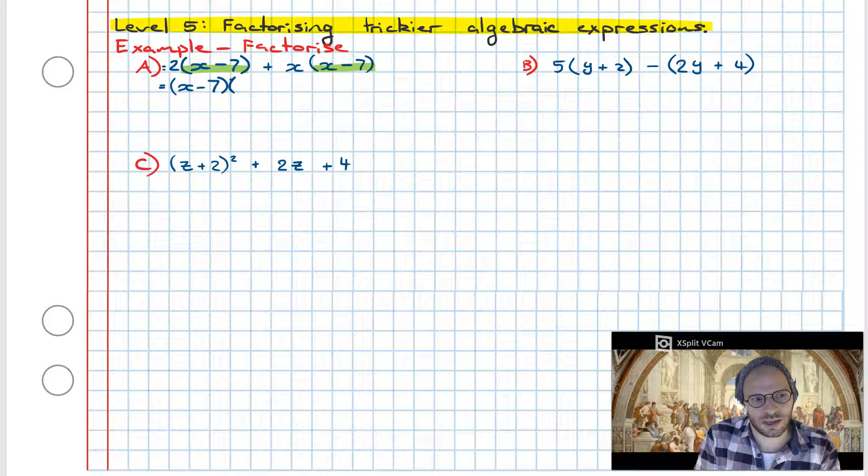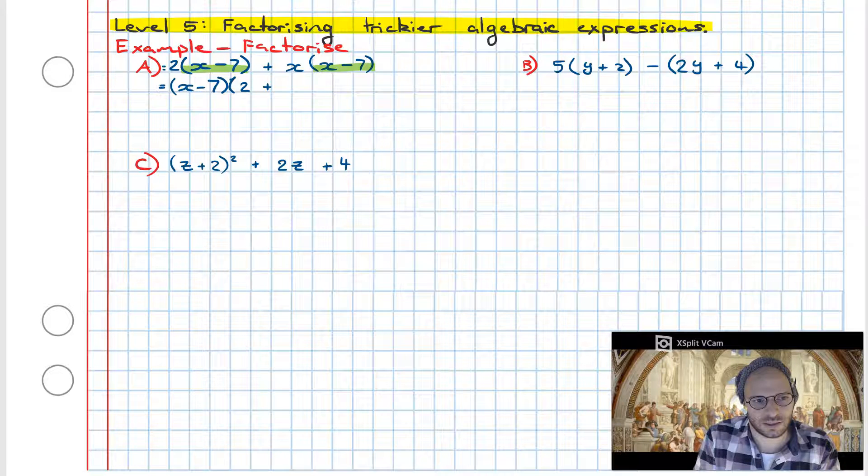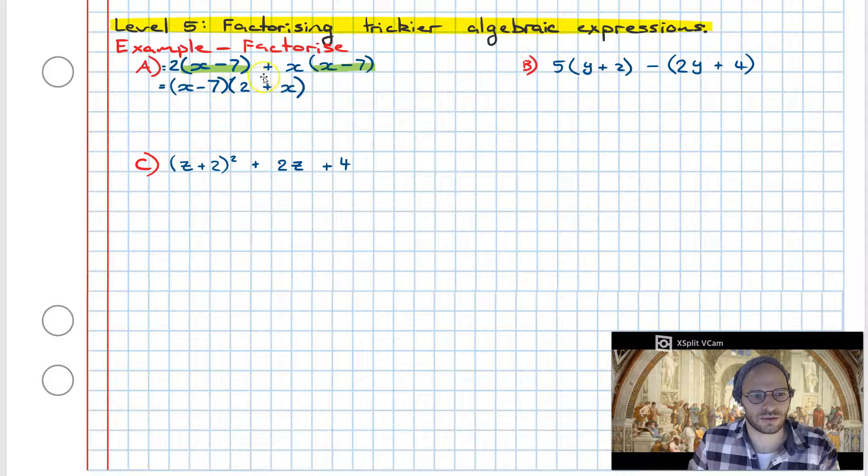Now the next step is we need to have a look at what we're leaving behind. In the first term we leave behind a 2, the operation is plus, and in the second term we leave behind an x. Therefore the factorization of 2 multiplied by x minus 7 plus x multiplied by x minus 7 is simply x minus 7 multiplied by 2 plus x. Easy done.